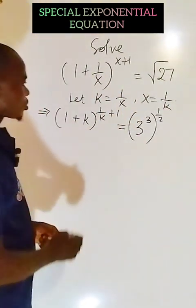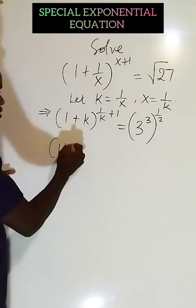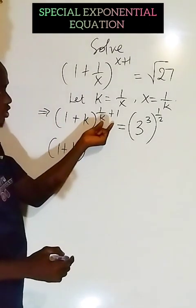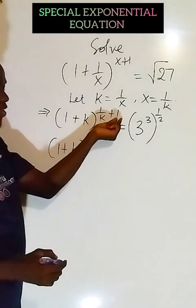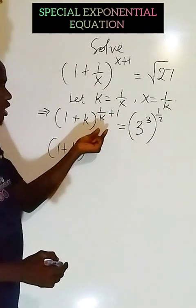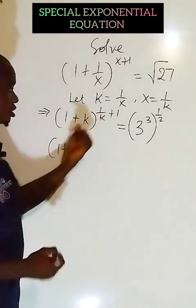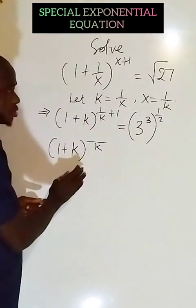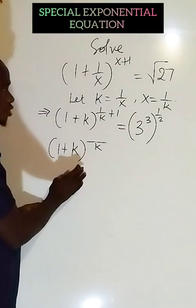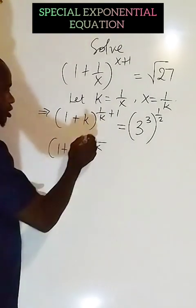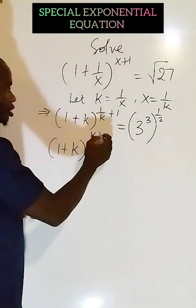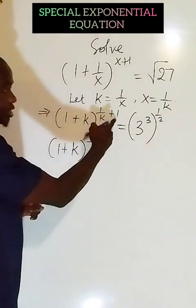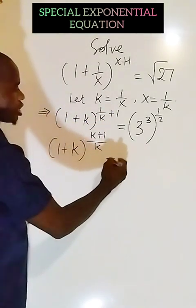Now from there, I have (1 + k) to the power, now this fraction with 1/k. I can write this fraction in this form. Taking the LCM, I have k. So from there, I'm going to be having (k + 1)/k when I try to write this in a single fraction.